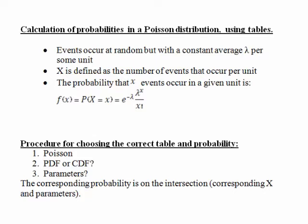First though, let's think about the situation that leads to the Poisson distribution. Events occur at random but with a constant average lambda per some unit. Random variable x is defined as the number of events that occur per unit. The probability that x events occur is given by the formula: e to the negative lambda, times lambda to the x, divided by x factorial.